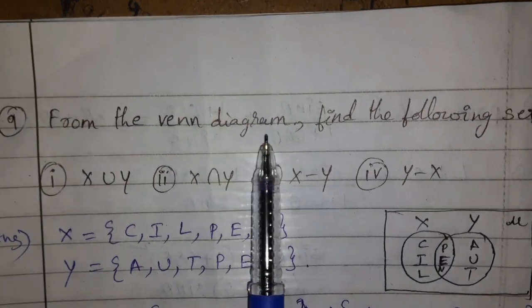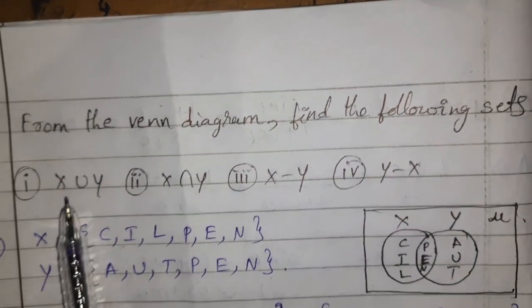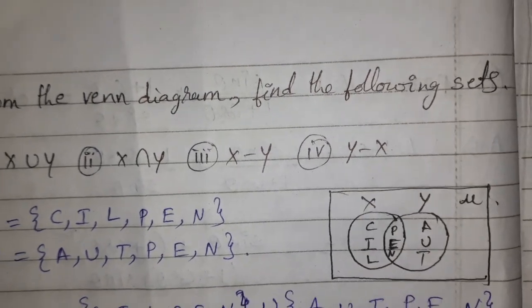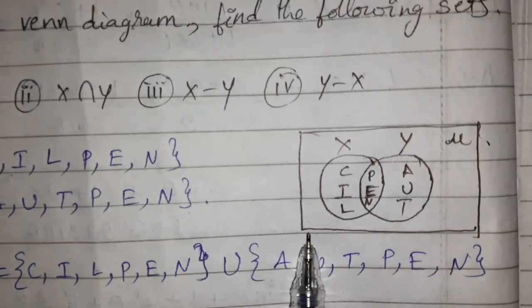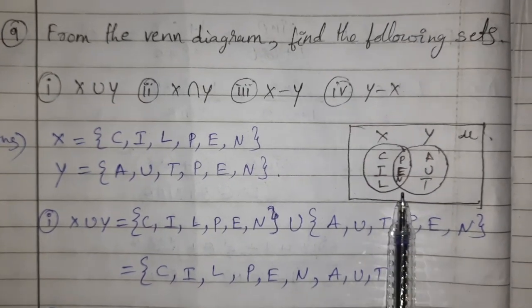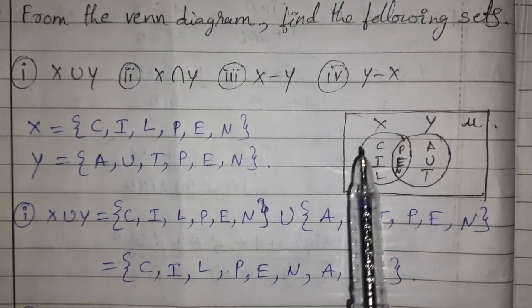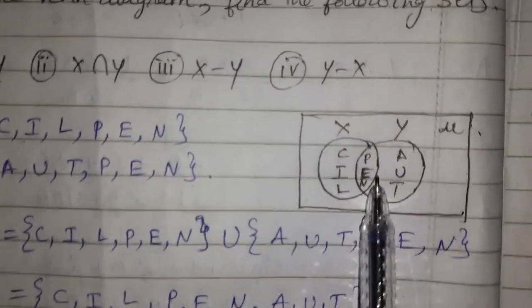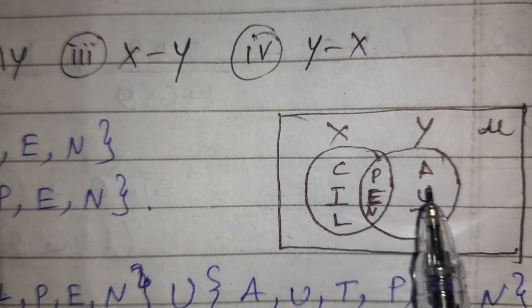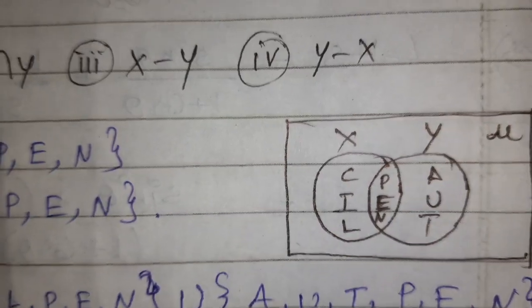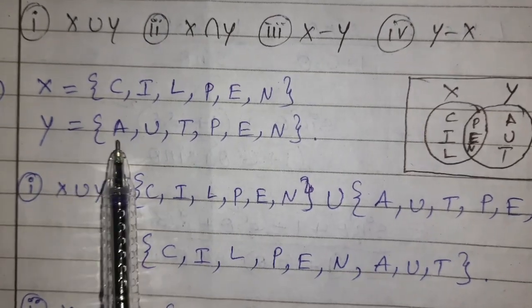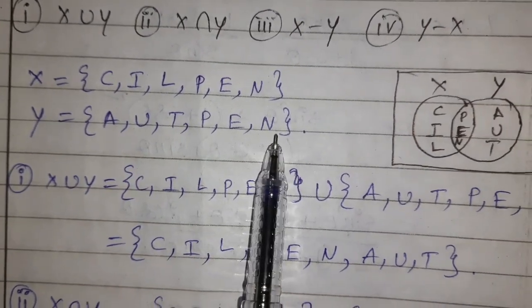Ninth question: from the Venn diagram find X ∪ Y, X ∩ Y, X − Y, and Y − X. From the diagram: X = {C, I, L, P, E, N} and Y = {A, U, T, P, E, N}.